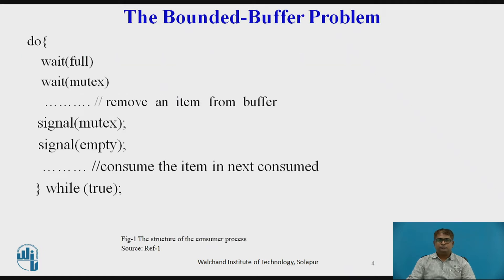The code for the producer process was discussed in the previous session. Here, the code for the consumer process is shown in the figure. Note the symmetry between the producer and the consumer. We can interpret this code as the producer producing the full buffers for the consumer, or as the consumer producing the empty buffers for the producer.